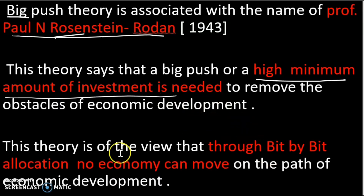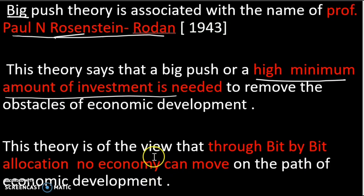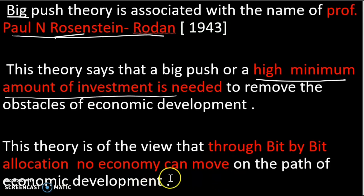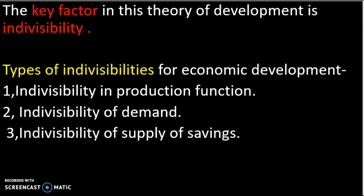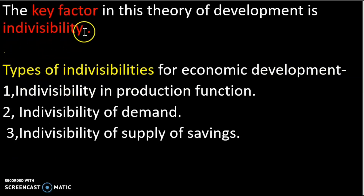Bit-by-bit allocation will not move economic development forward. This theory holds the view that through bit-by-bit allocation, no economy can move on the path of economic development. Indivisibility is key to moving on the path of economic development.